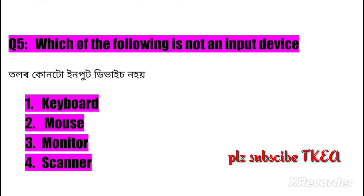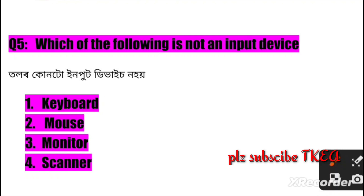Question number five: Which of the following is not an input device? Option one: keyboard, two: mouse, three: monitor, four: scanner. The right answer is number three: monitor.